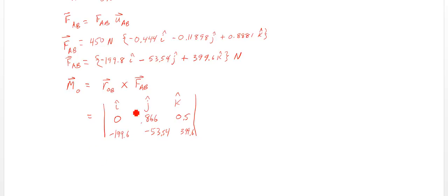So now we're going to take that cross product. So we're going to cover up I. We're going to have this times this minus this times this. We're going to have 0.866 times 399.6 minus 0.5 times negative 53.54. That's all I.